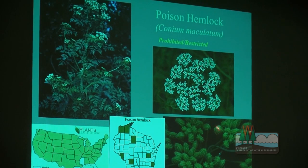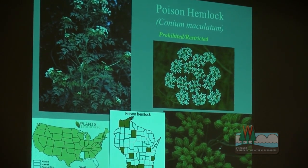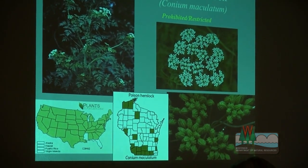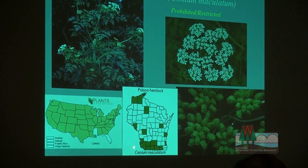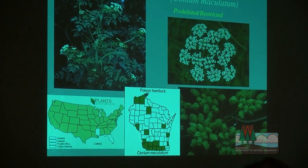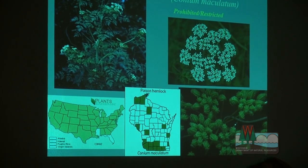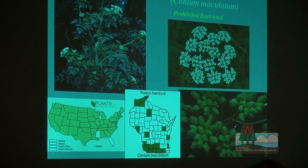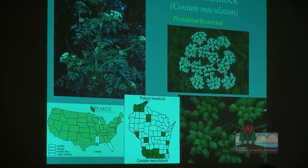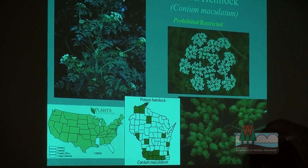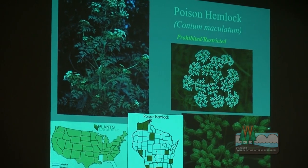Poison hemlock is another weedy white umbel — that umbrella-shaped flower — getting into the five-to-six-foot range, a much stouter plant with ferny-like leaves and little football-shaped fruits. If you don't have it yet, you should be very aware of it. It's starting to spread in southwestern Wisconsin counties, mostly along roadsides, then moving into adjacent pastures and hay fields where it can kill cows and horses. It's abundant along roadsides in Illinois and Indiana. When you see the first one, get out there and remove it and let people know so we can keep on top of these.